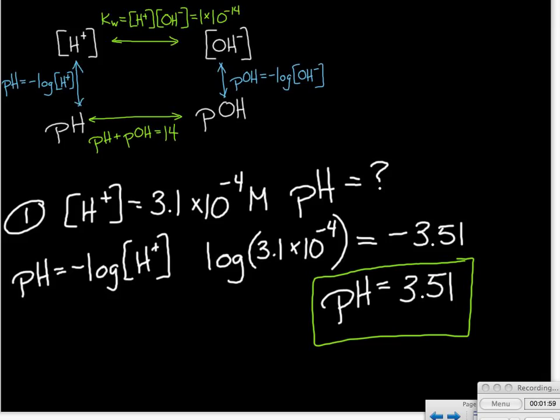Once you take the logarithm, you should have two decimal places in your answer. So our pH should go to two decimal places because our original concentration had two significant figures.